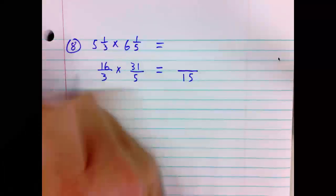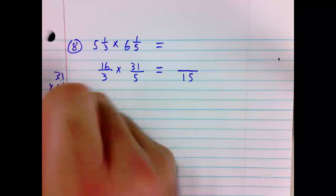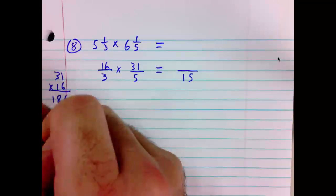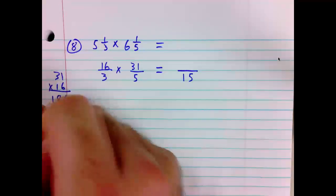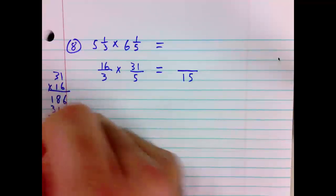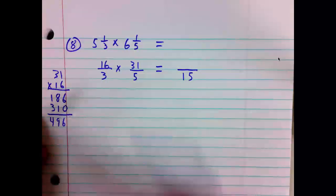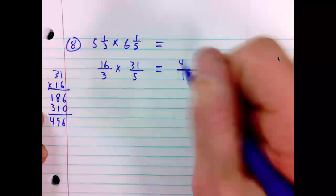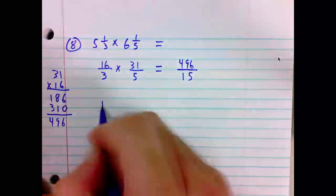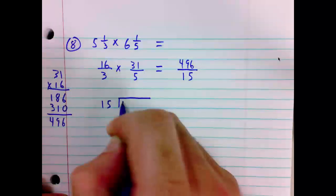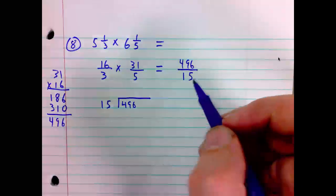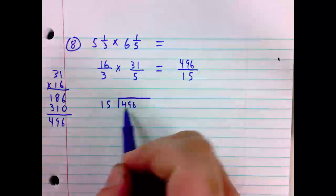31 times 16 to my scratch paper. 6 times 1 is 6, 6 times 3 is 18. 0 for placeholder. 1 times 1 is 1, 1 times 3 is 3. Summing 6, 9, 4. 496. Now, we must consider how many times does 15 go into 496. 15 divides into 496. Remember, a fraction is just a division problem. Top divide the bottom. 496 divided by 15.